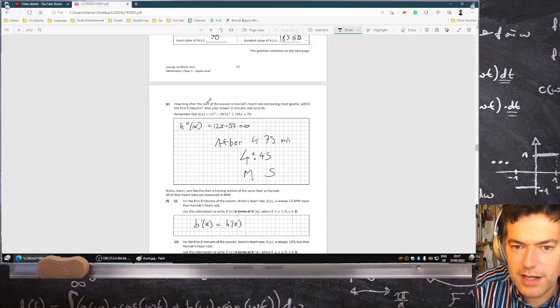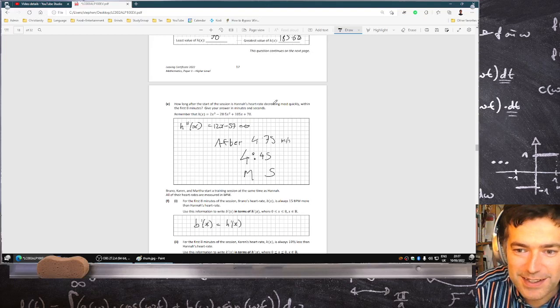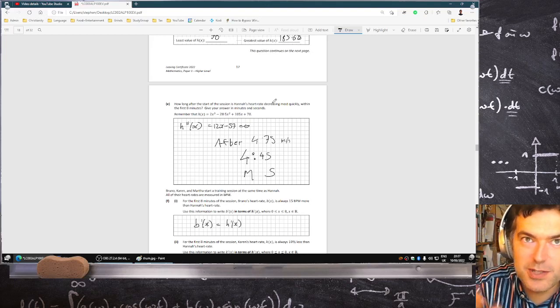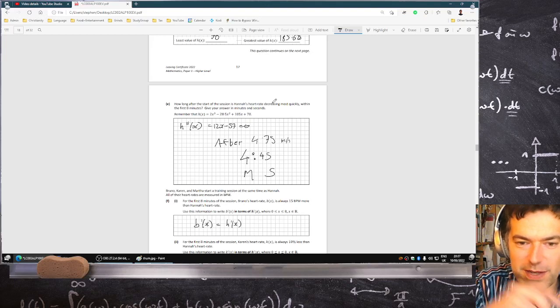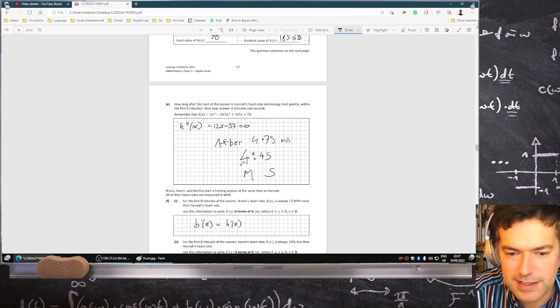So to find out how long after the start of session's heart rate, is Hannah's heart rate decreasing most quickly? That is, when is the derivative at its extreme value? That is, when is the second derivative 0? So I solved this and got 4.75 minutes, so 4 minutes and 45 seconds.